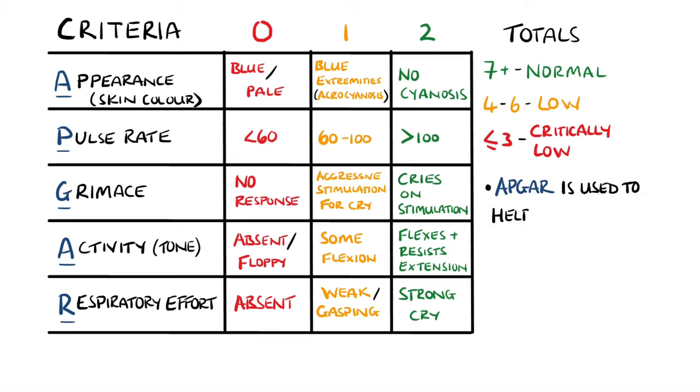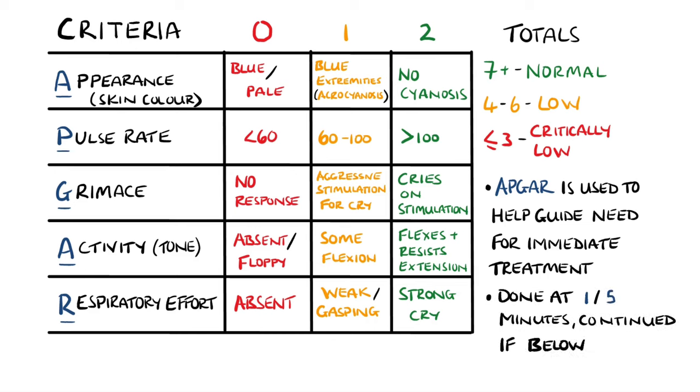The score is used to determine whether or not a newborn needs immediate treatment. It is done at one minute and repeated again at five minutes after birth. And in the cases where the score is still less than seven, it is continued every five minutes for 20 minutes.